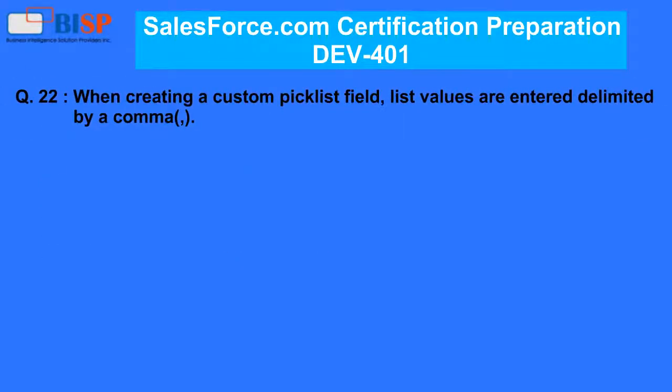Question 22. When creating a custom picklist field, list values are entered delimited by a comma. A. True. B. False.